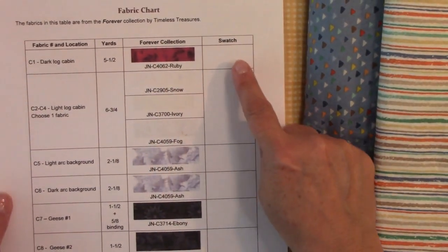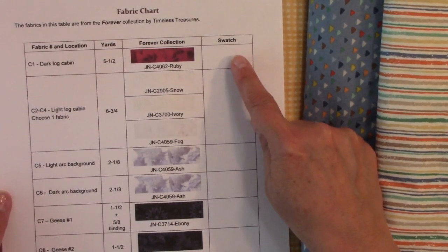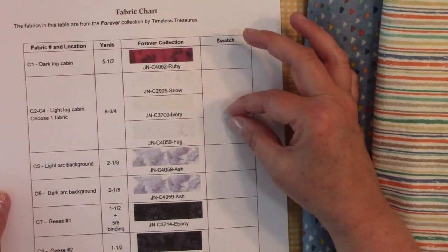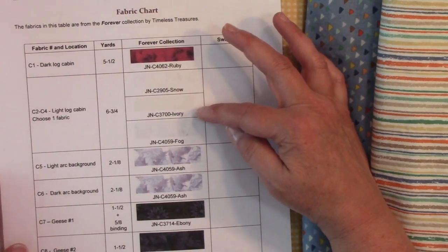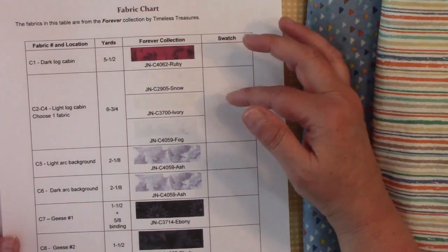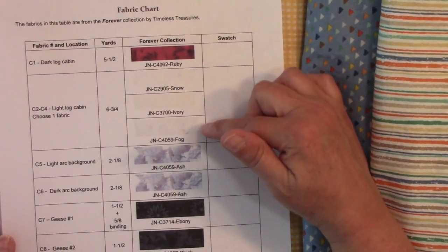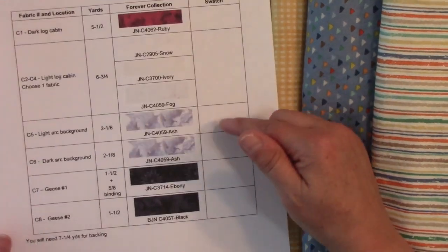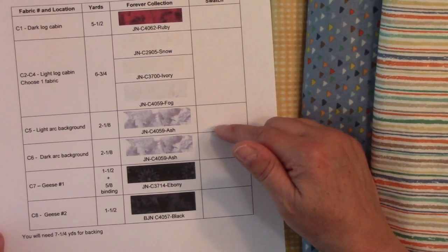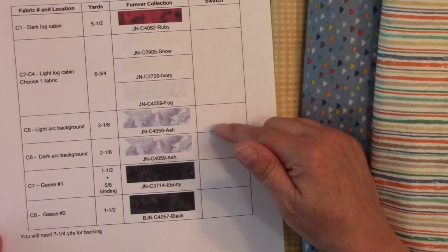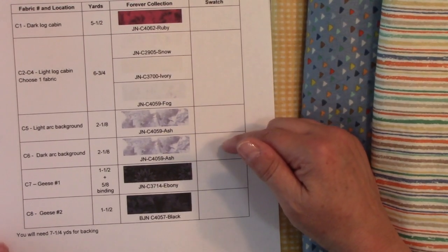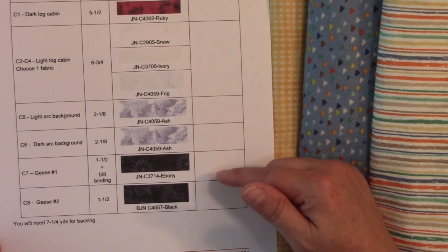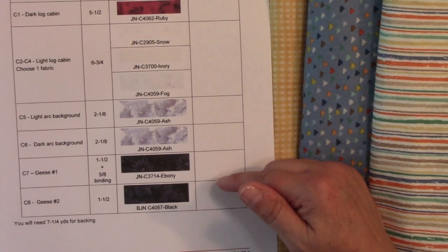So if we look at this chart, the first one is the dark log cabin, and it's the red fabric. The second three fabrics were supposed to be different fabrics, but they're so close together that I decided to just try it with one fabric for the light log cabin. The next two fabrics on here are the light and the dark arc background. That's simply the background in the flying geese units. The last two fabrics are geese number one and geese number two, and both of these are done out of black fabric.